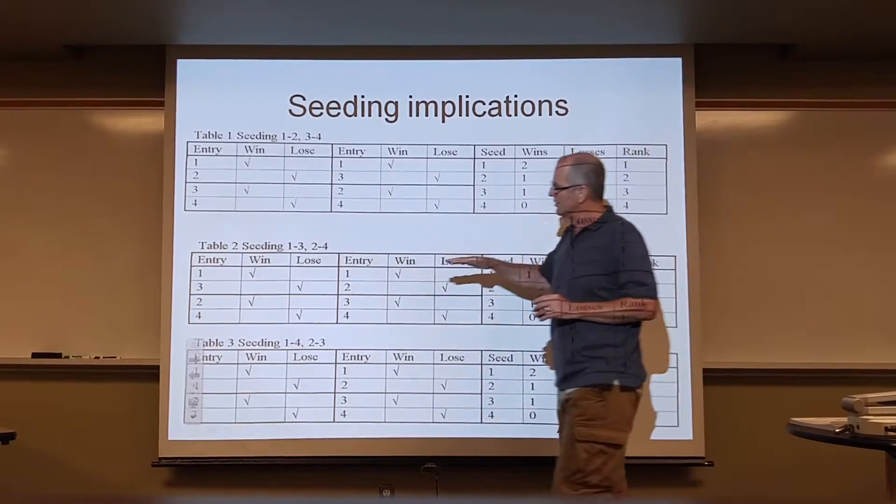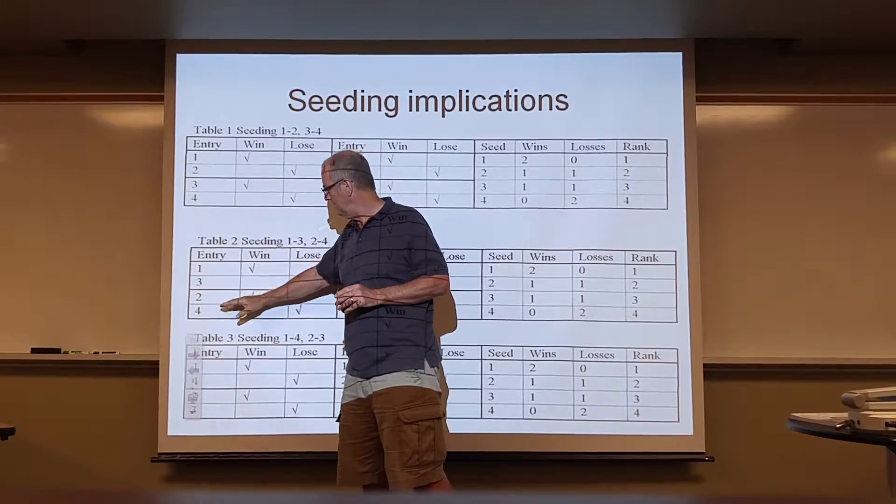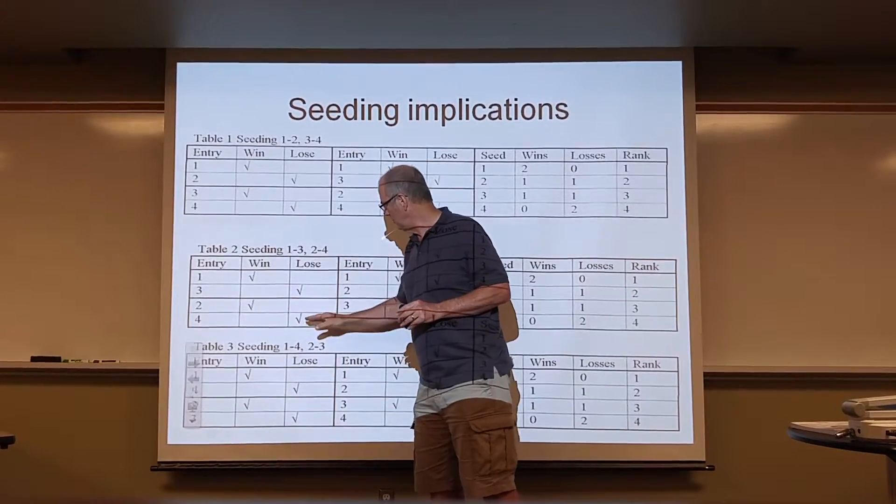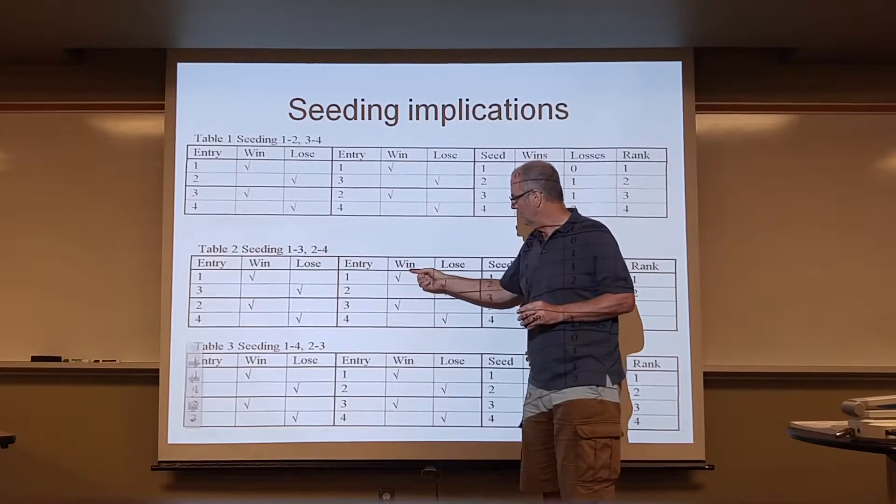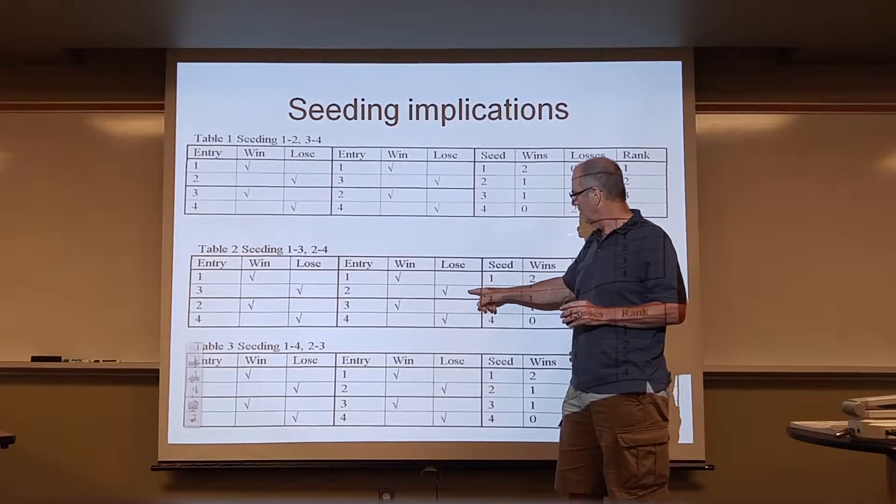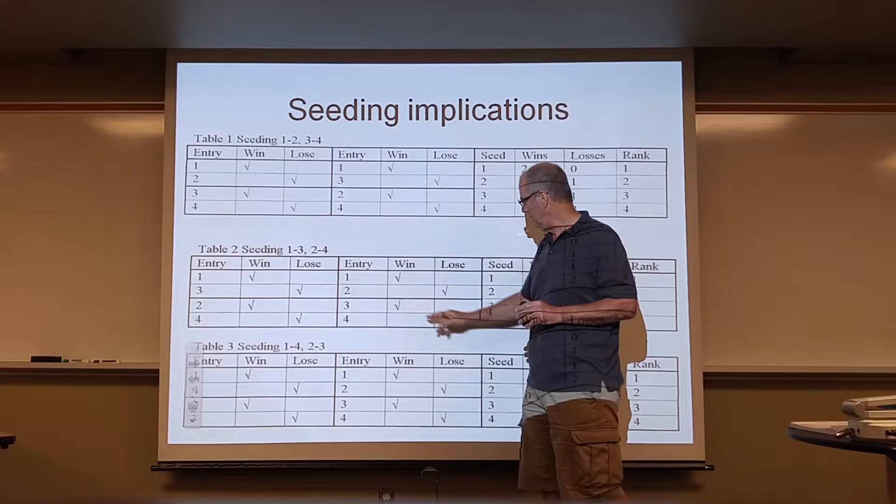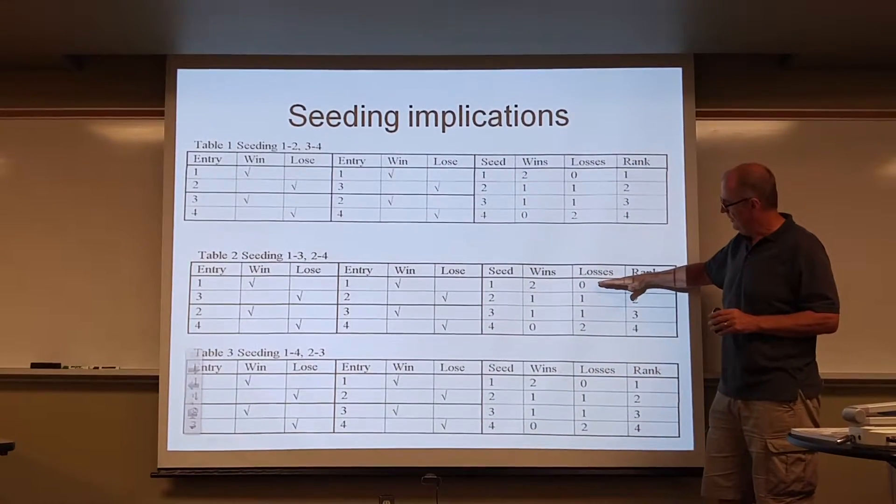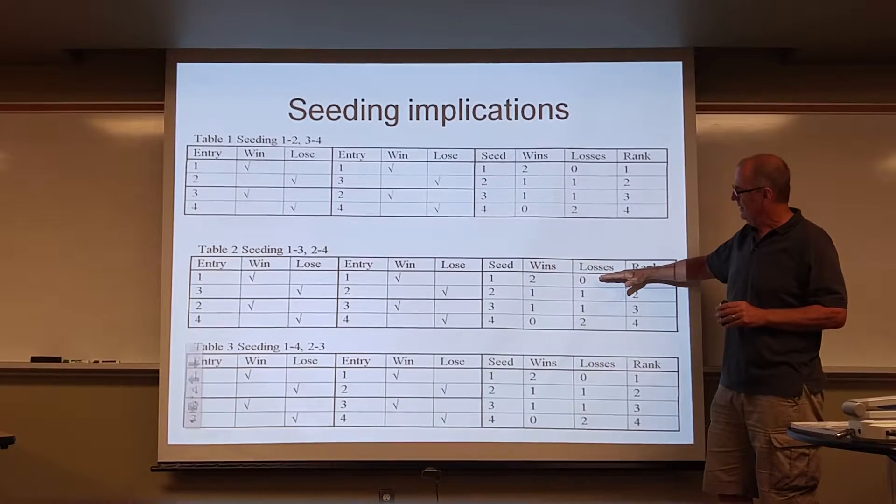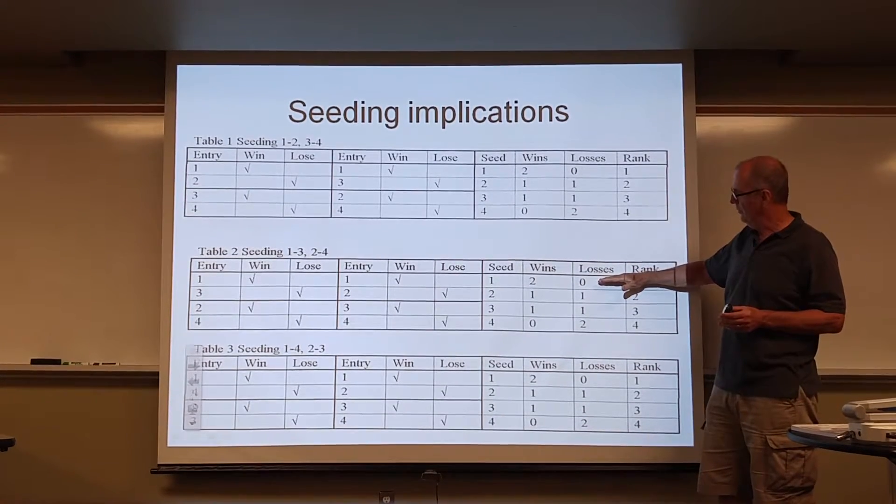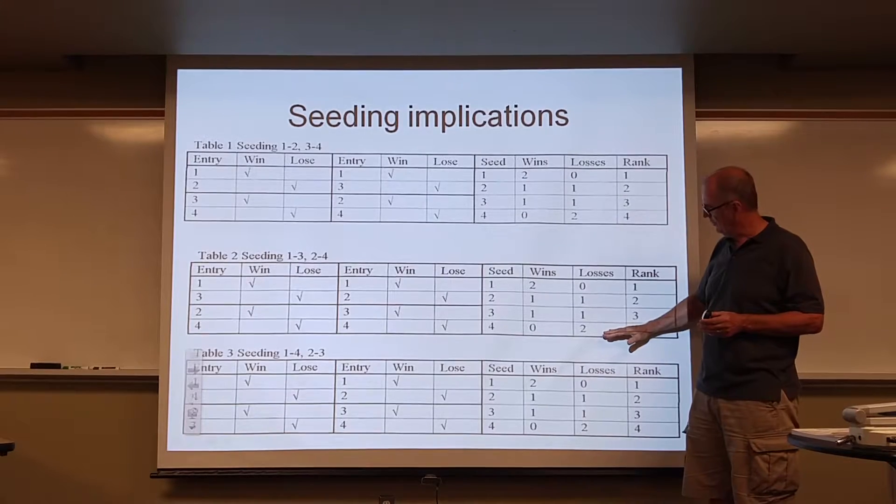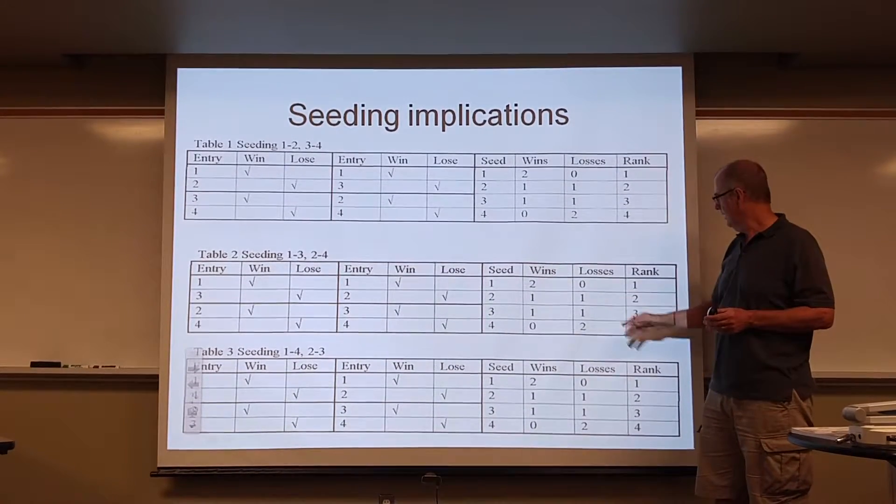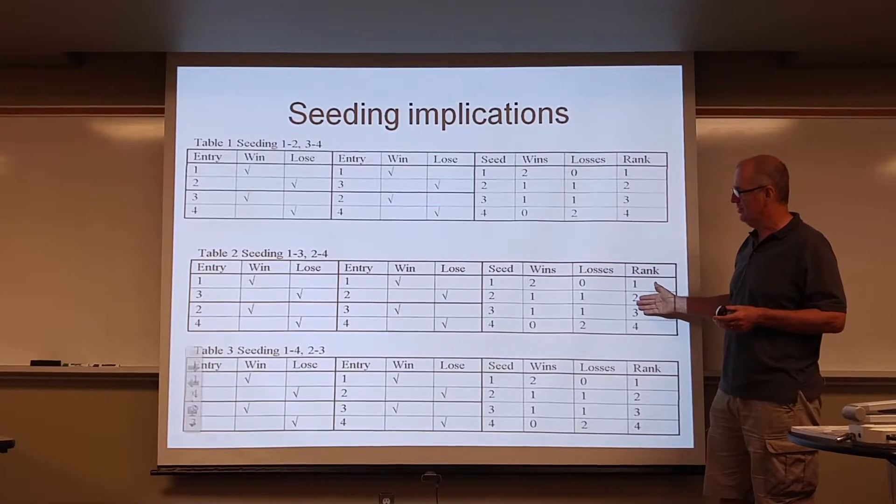If you seed it this way, one playing three and two playing four, one would beat three, two would beat four. Now one and two are going to play, so one wins, two loses, three beats four, and then loses. And again, the same thing happens every single time. The number one seed is going to win both, the fourth seed is going to lose both, and there's going to be a tie between second and third. And again, we need a tie-breaking procedure to pull this apart.